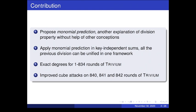In this paper, we propose an underlying technique called monomial prediction. It can be seen as another explanation of current division properties. With this new conception, all the previous division properties can be unified into one framework. Then we can apply monomial prediction to the key-independent sums. We also obtain the exact degree for rounds 1 to 834 of Trivium, and improved attacks on 840, 841, and 842 rounds of Trivium.